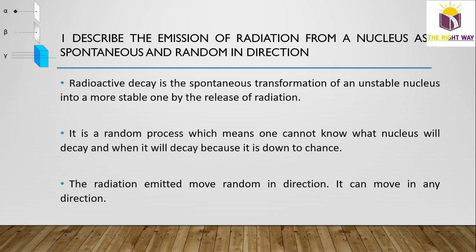For example, in 1 gram of any material, we know there are 6.02 × 10²³ atoms. We cannot predict which of these atoms will emit radiation — it is spontaneous and random. The radiation emitted also moves in random directions; there is no specific direction. It may move along the x-axis, y-axis, or in any plane.